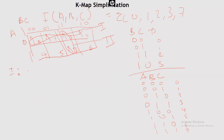For group 1, we write the minterms: ĀB̄C̄ + ĀB̄C + ĀBC + ĀBC̄. Notice that B and C keep appearing and disappearing (changing sign), so we cancel them. We're left with Ā, because A remains as Ā throughout all four terms.